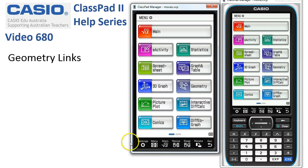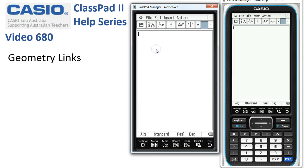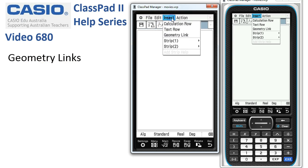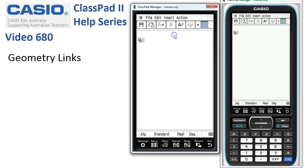Geometry links in any activity. Let's start in any activity and start straight off by putting in a geometry link. Here we go under insert geometry link.